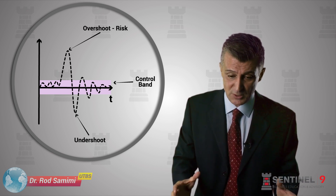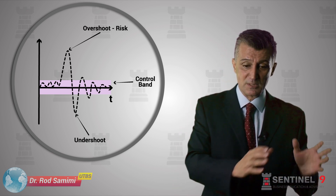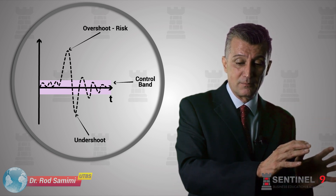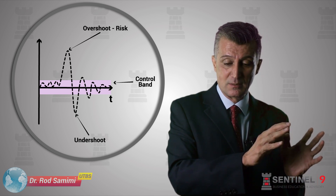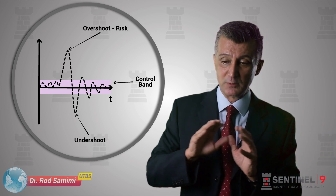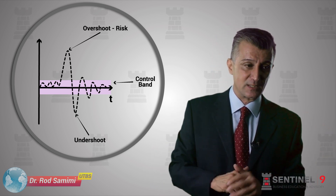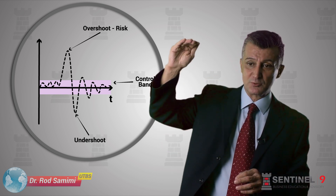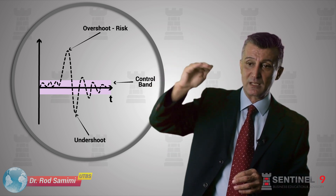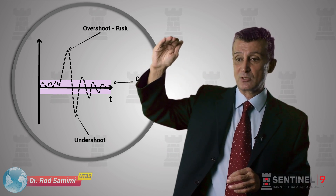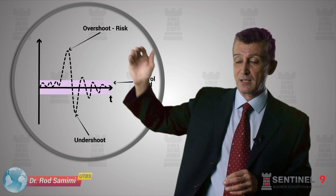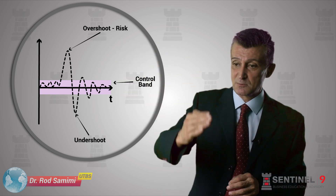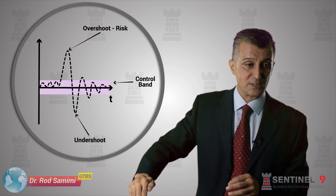The first thing with risk we need to recognize is its definition: an outcome not commensurate with what we desire. The second thing is that a trend of overshooting — getting more than we need continually — is just as much of a risk position as undershooting.